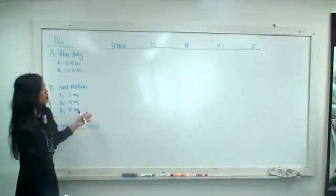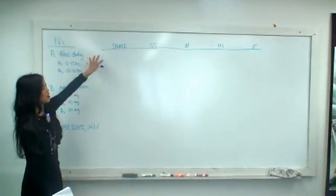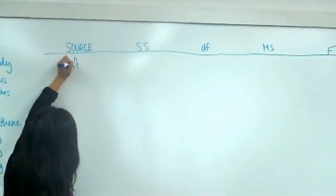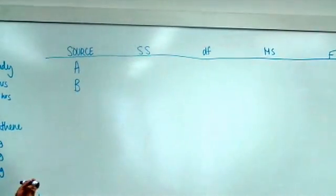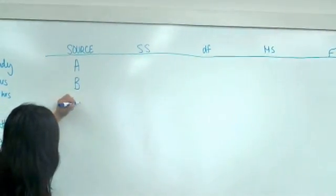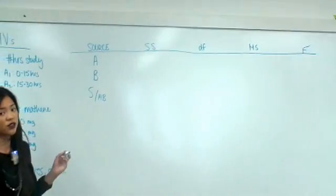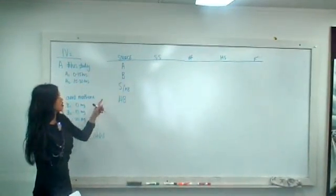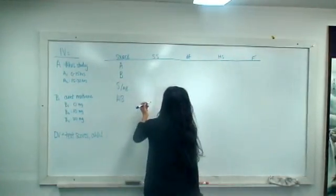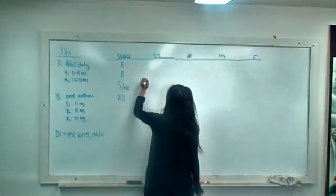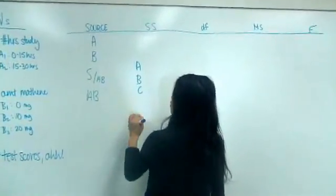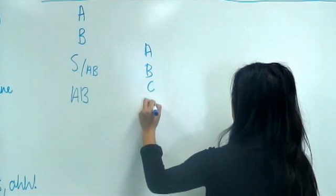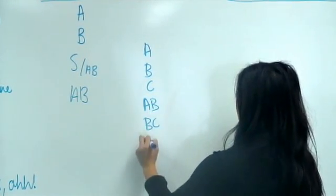The next part — remember how you would do it in a regular ANOVA — is to go to your source table. For your sources in a two-factor design, we have independent variable A and B. The within-group source is S of AB. We also need the interaction term, AB, sometimes written as A times B.